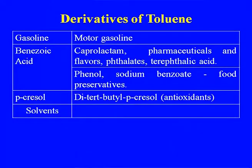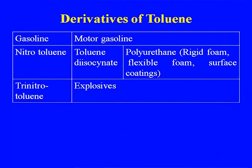Toluene goes to benzoic acid, and benzoic acid to caprolactam through one route. Phenol, sodium benzoate — an important food preservative — and para cresol and solvents are other outlets. TNT, tri nitro toluene, is a very important explosive derived from toluene.